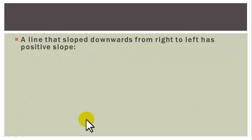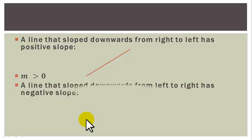A line that is sloped downwards from right to left has positive slope. This is a line with positive slope, that is m greater than 0. A line that is sloped downwards from left to right has negative slope. This is a line with negative slope, m less than 0.